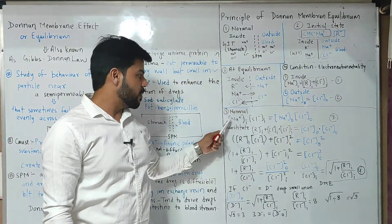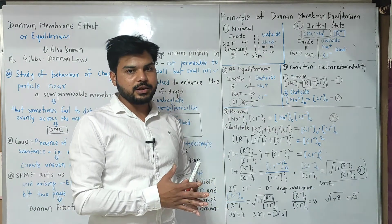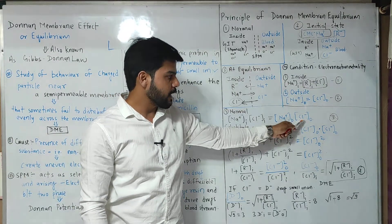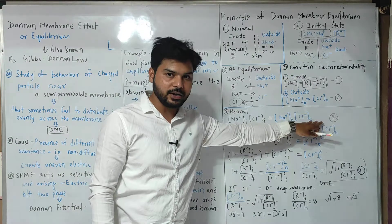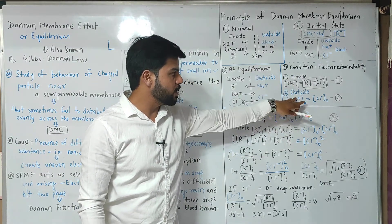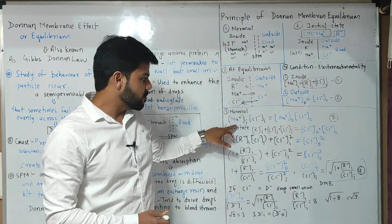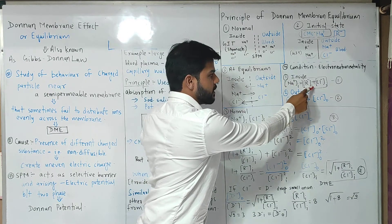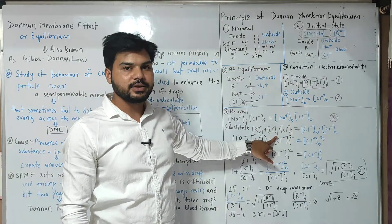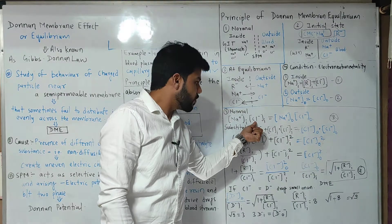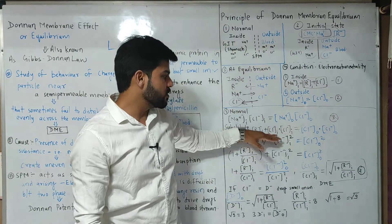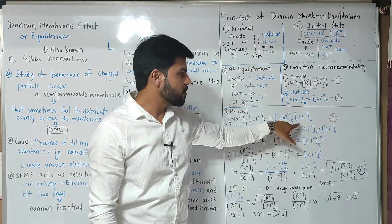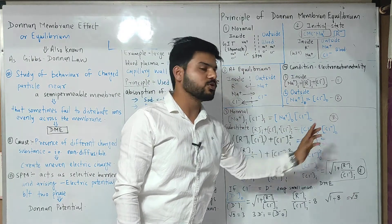From the simple universal equation — when there is no non-diffusible material — the common equation we have is: [Na⁺]ᵢₙ × [Cl⁻]ᵢₙ = [Na⁺]ₒᵤₜ × [Cl⁻]ₒᵤₜ. Substituting the value of sodium from equation one into this equation, we get: ([R⁻]ᵢₙ + [Cl⁻]ᵢₙ) × [Cl⁻]ᵢₙ = [Cl⁻]ₒᵤₜ × [Cl⁻]ₒᵤₜ. This gives us [Cl⁻]²ₒᵤₜ on the right side. This is the simple universal equation, and here we are putting in the experimental values.